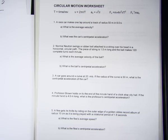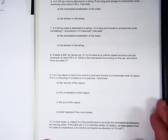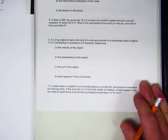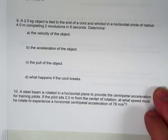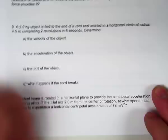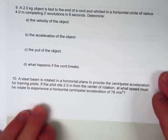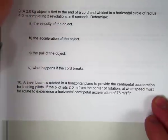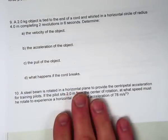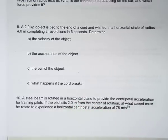We'll flip over to nine first. Number nine says we have a two-kilogram object tied to the end of a cord, whirled in a horizontal circle of radius four meters, completing two revolutions in six seconds. Determine the velocity of the object, the acceleration, the pull of the object, and what happens if the cord breaks.